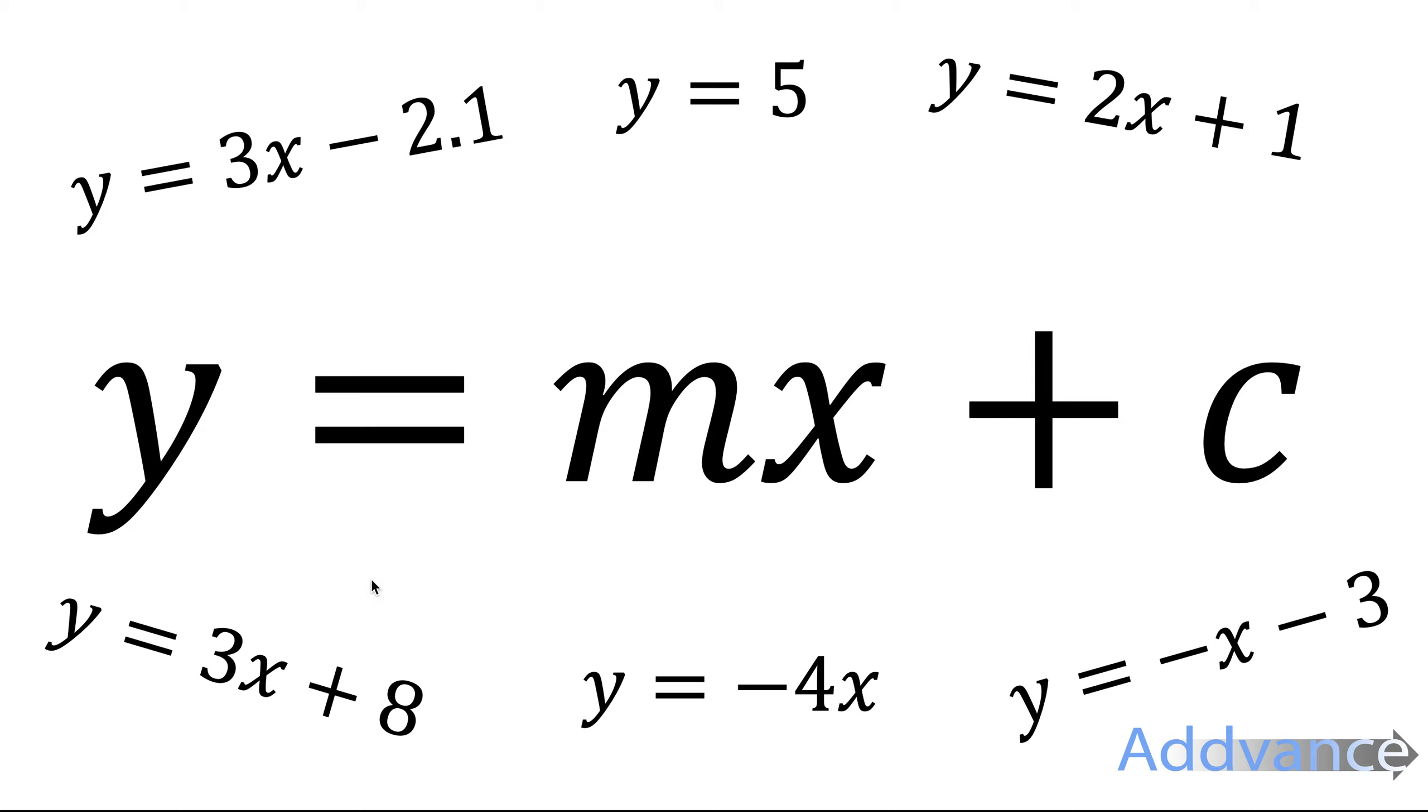Now there's some I want to draw your attention to. The two in the middle, y equals 5 and y equals minus 4x, are a bit different. Part of their equation is invisible.